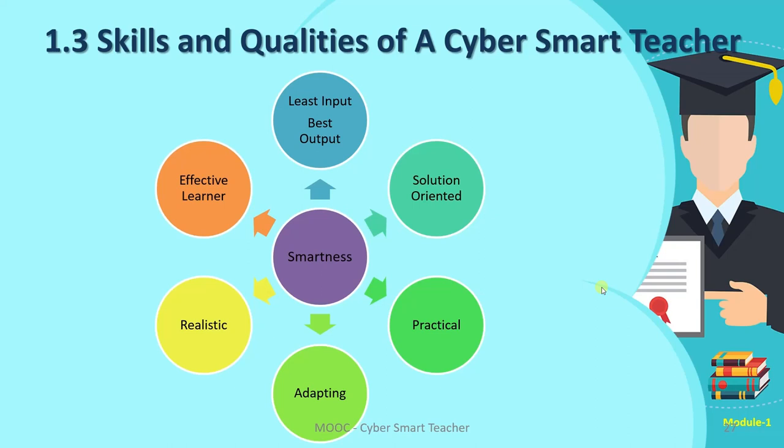Smartness also comes with the tendency of being an effective learner. Smart people learn new things — whatever is new, they see what is important in this era and they try to adopt the skills and tools that are necessary to be smart. They learn effectively regardless of their age or designation. These are some of the qualities of smartness.